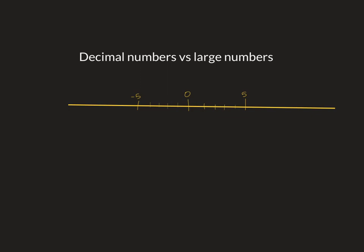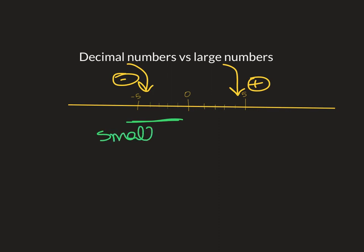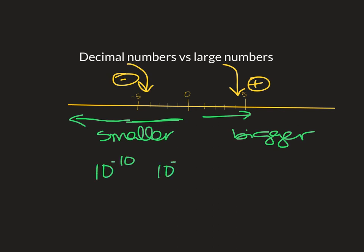When we do scientific notation, we need to keep in mind: is it a decimal number or is it a large number? Decimal numbers are going to have negative exponents, and large numbers are going to have positive exponents. Think of a number line — negative exponents are small numbers. As your exponent gets smaller and smaller, 10 to the minus 10 is smaller than 10 to the minus 5 because 10 to the negative 10 is further down the number line.